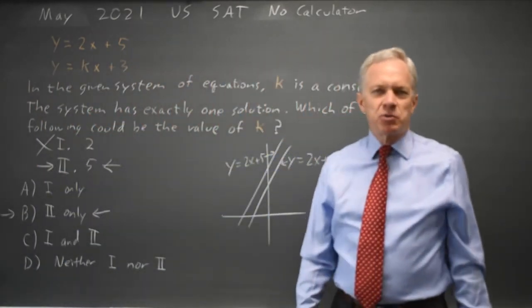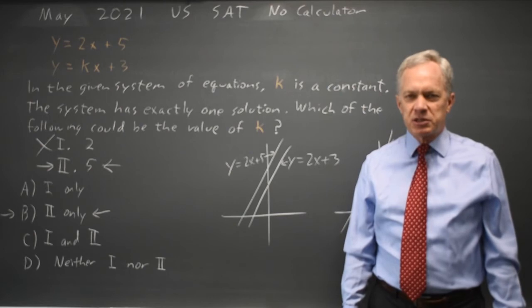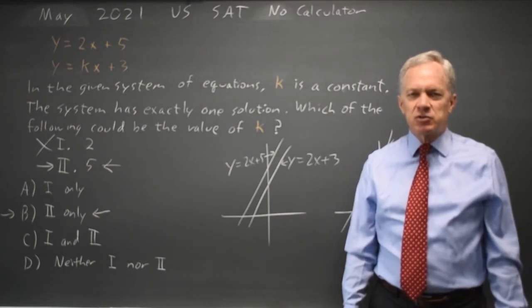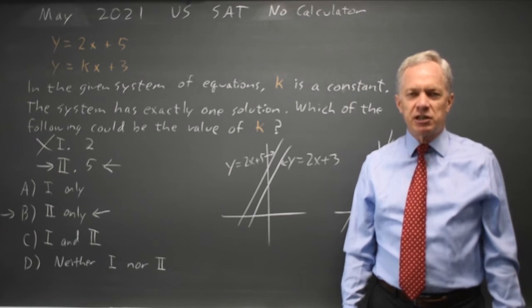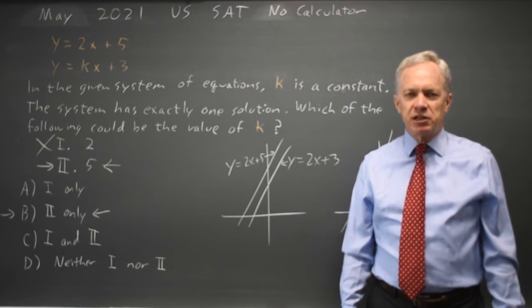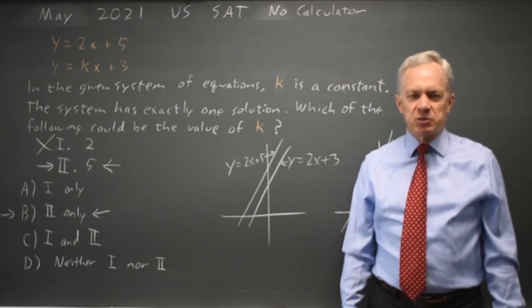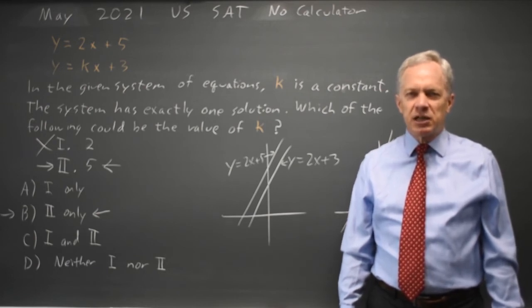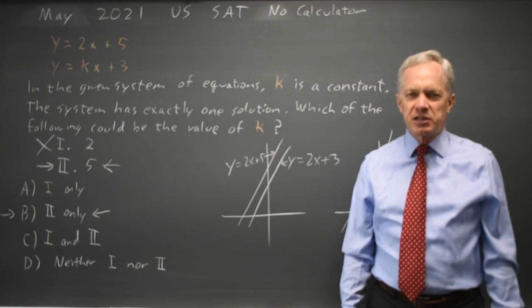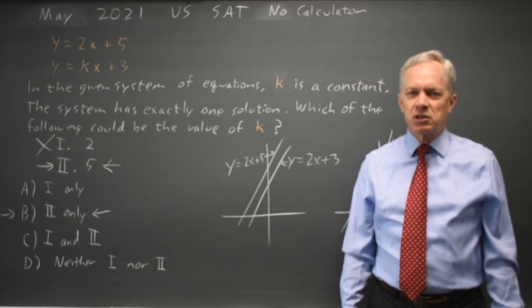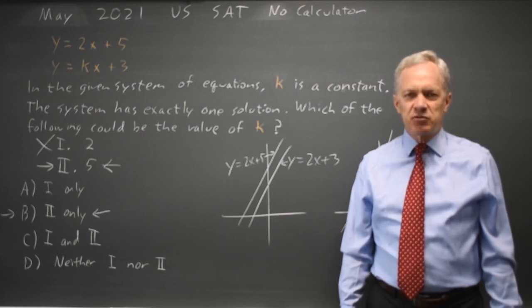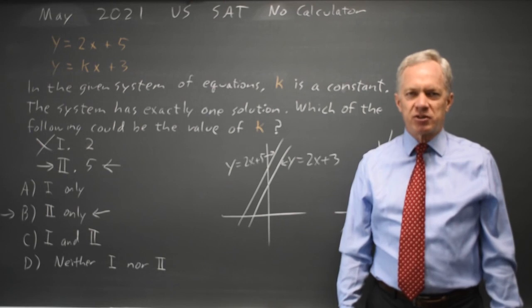For some reason, College Board loves this question and shows up almost every time in some form. Given a system of equations, if the slopes of two linear equations are different, there's exactly one solution. If the slopes are the same and the intercepts are different, there are no solutions. If the slopes are the same and the intercepts are also the same, there's infinitely many solutions. College Board will almost always test that concept, so make sure you review it before your SAT. And come back soon for my next video, with math there's always more.